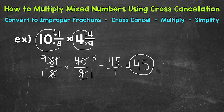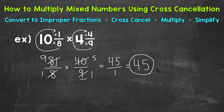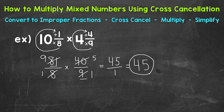Without cross cancellation, we would have had to multiply 81 times 40 and then 8 times 9, and then simplify — we'd eventually get the same answer. Cross cancellation is a useful tool when multiplying fractions, giving us smaller and easier numbers to work with. We can only use cross cancellation when we have common factors other than 1 between our numerators and denominators. There's how to use cancellation when multiplying mixed numbers.